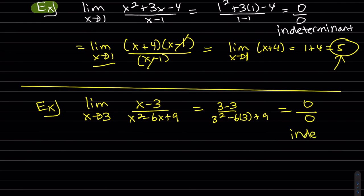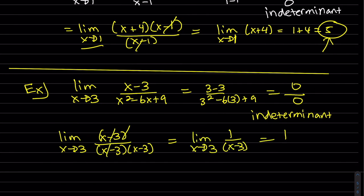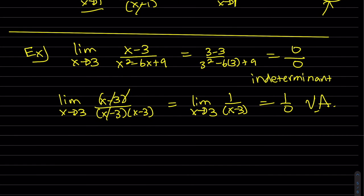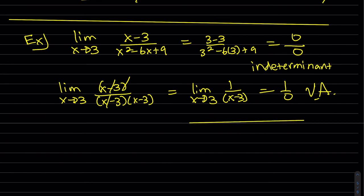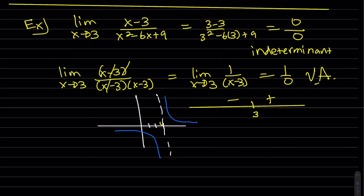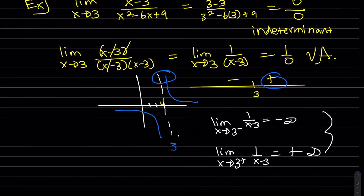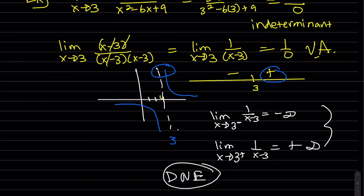Again it's indeterminate, so it looks like it's going to factor. After factoring, we have 1 over 0, which means vertical asymptote. We do a quick sign chart — we only need to check at 0 — and it's positive on one side and negative on the other. The left side of 3 is negative infinity. So again this limit does not exist, and the left and right limits are different.